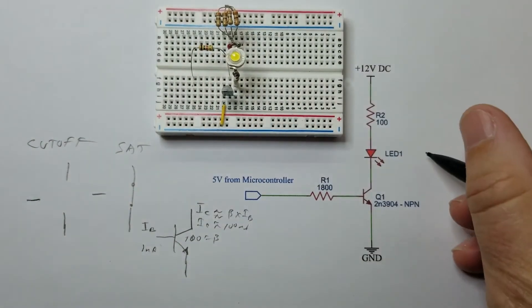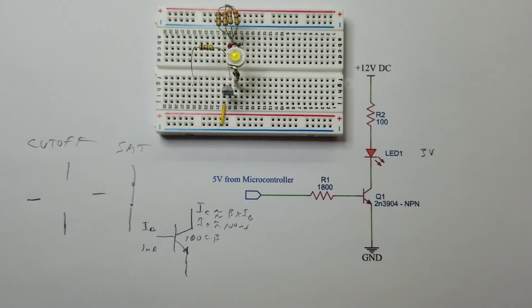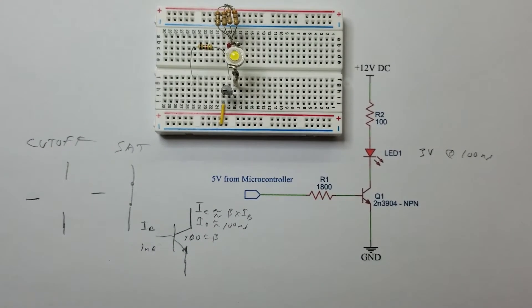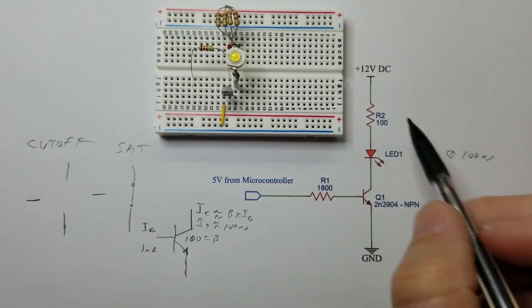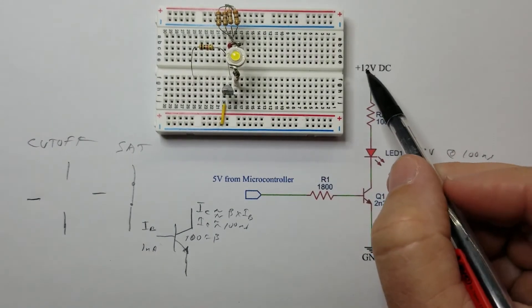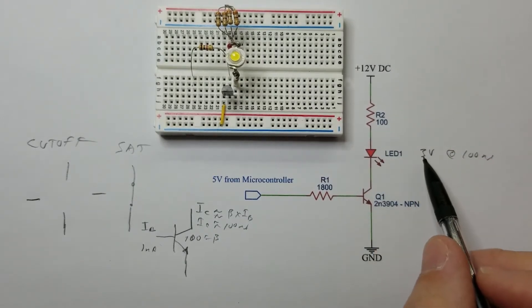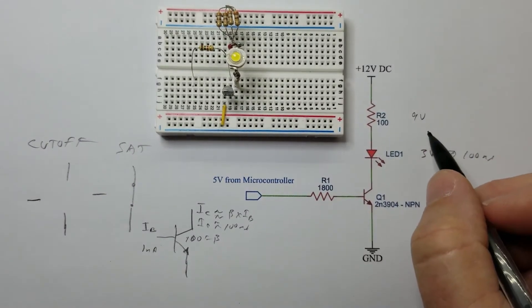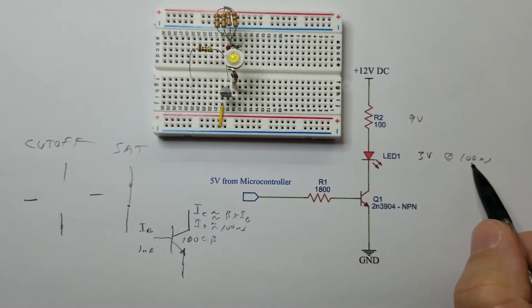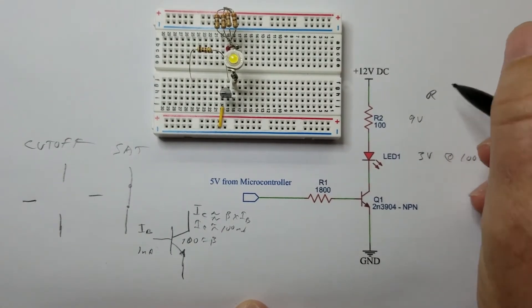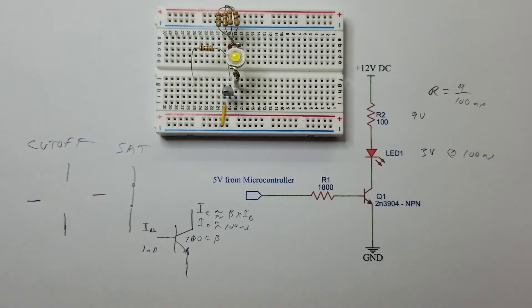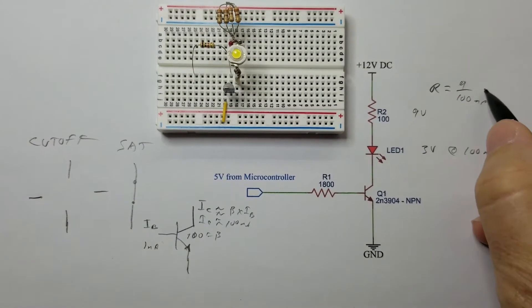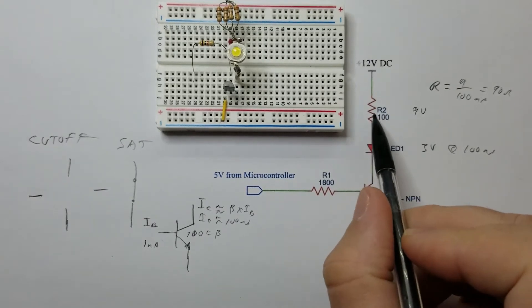This high-powered LED has about a 3-volt drop across it — a white high-powered LED at 100 milliamps. We need to determine the collector resistor value. Our power supply is 12 volts, so 12 volts minus the 3-volt LED drop gives us 9 volts across the resistor. Ohm's Law tells us R equals 9 volts divided by 100 milliamps, giving us 90 ohms. So for this example, we want a 90-ohm resistor here.